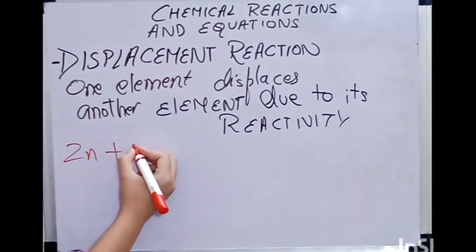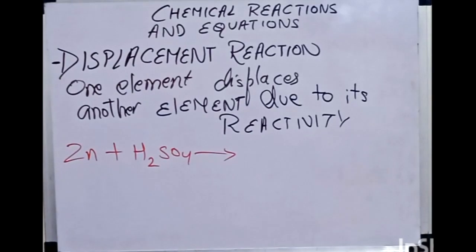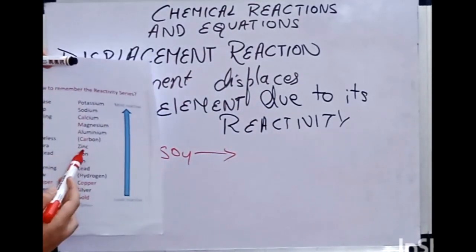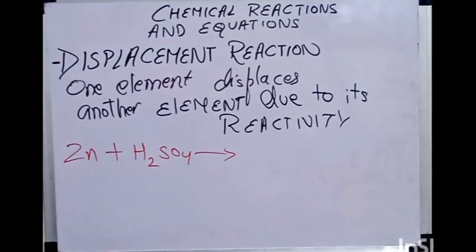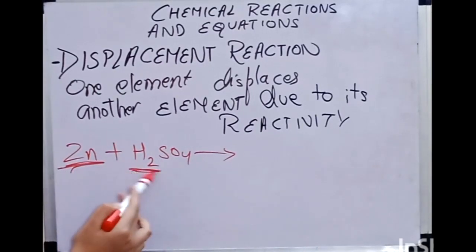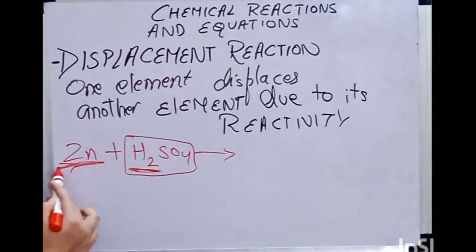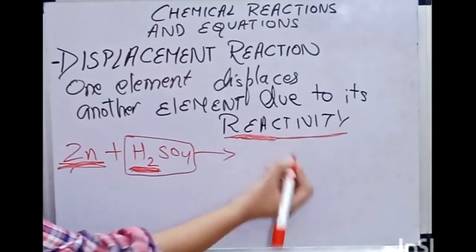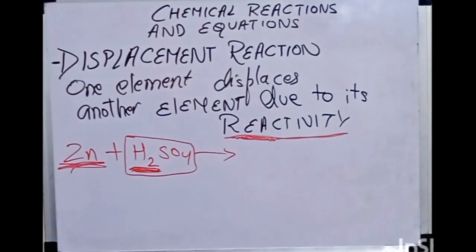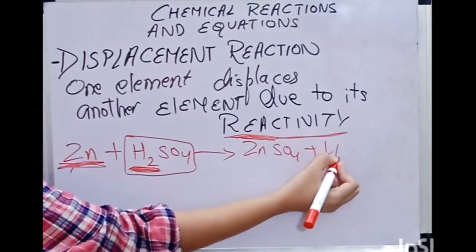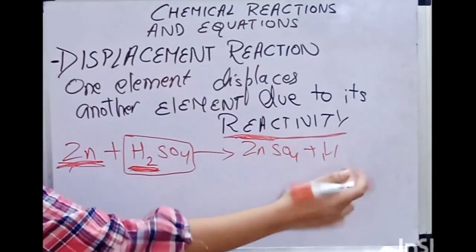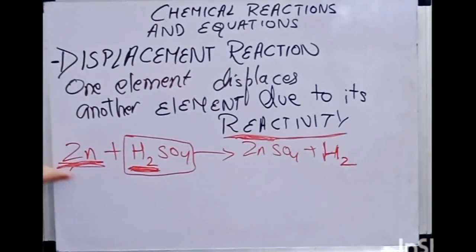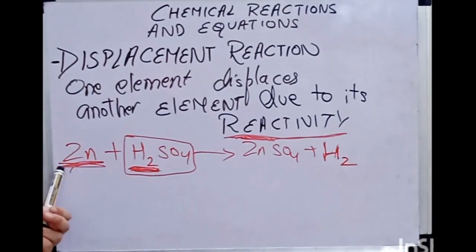Example: Zn + H2SO4. Looking at the reactivity series, zinc is more reactive than hydrogen. So zinc will displace hydrogen from H2SO4. The product formed is ZnSO4 + H2. This occurs because zinc is more reactive than hydrogen, so the less reactive element (hydrogen) gets displaced by the more reactive one (zinc).